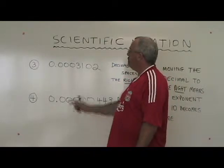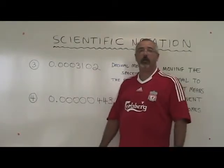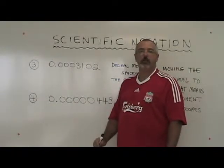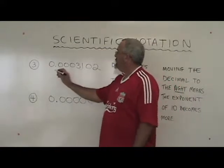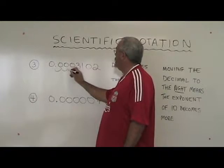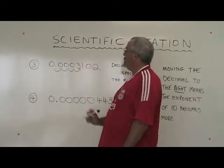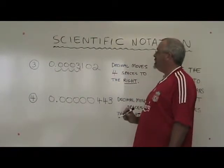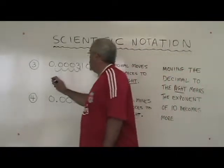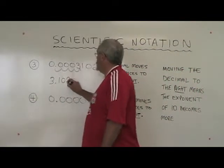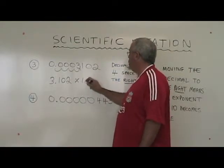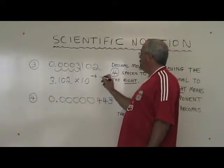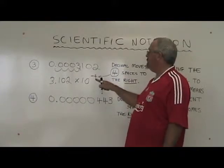In example three, we have a very small number instead of a very large number. We have to do the same thing. We have to move the decimal so that there is only one non-zero digit to the left of the decimal. That means I'm moving it four spaces to the right. So here I write decimal moves four spaces to the right. My new number becomes 3.102 times ten to the negative four. Because I move four spaces, this digit in the exponent of ten is a four.